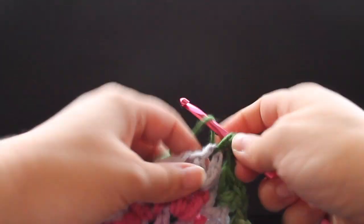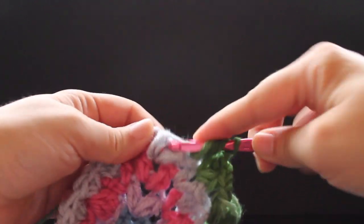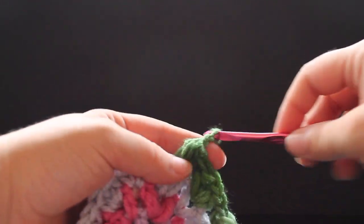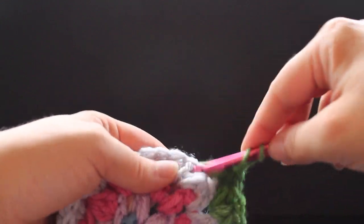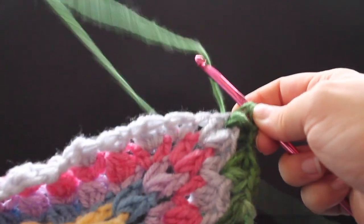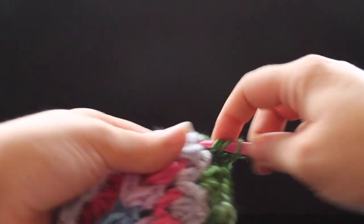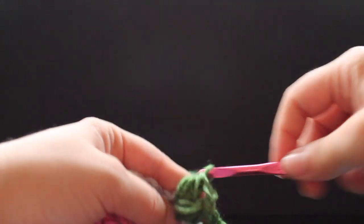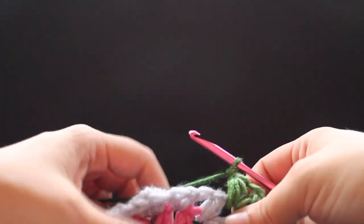Now in our corner we're going to work a puff, chain two. We're going to work a puff in that same chain two space, chain one. Now across your edge you're going to work a chain one and then a small puff v-stitch in each half double crochet v-stitch across.